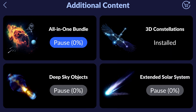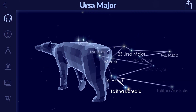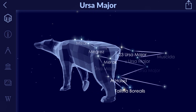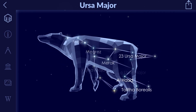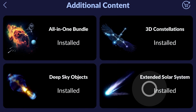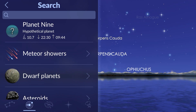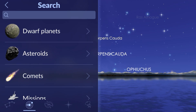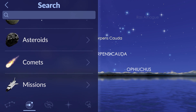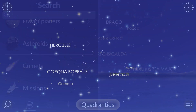Take your stargazing to the next level by getting 3D models of constellations and their stories. The Extended Solar System in-app upgrade lets you add numerous dwarf planets, asteroids, comets, and meteor showers to your sky map.